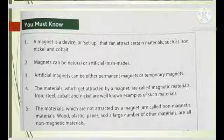Now you must know is given there. Thirteen points are there in all. I have divided into two parts. First fact is, a magnet is a device or setup that can attract certain materials. Number two, magnets can be natural and artificial. Artificial magnets can be either permanent or temporary. The materials which get attracted towards the magnet are known as the magnetic and which do not, they are called the non-magnetic. This is all about the five points given at the top.